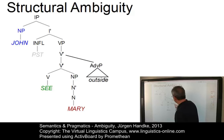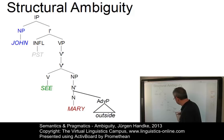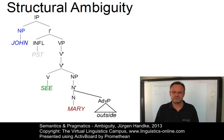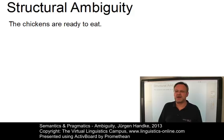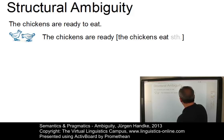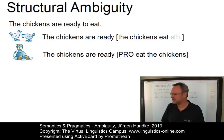The same happens if we replace the prepositional phrase with an adverbial: 'John saw Mary outside.' In one interpretation, John must have been outside — the seeing took place outside. In the second interpretation, Mary must certainly have been outside. In non-finite clauses such as 'the chickens are ready to eat,' we can also have structural ambiguity. This can mean the chickens are ready to eat something themselves, or alternatively, the subordinate clause has the chickens as the object — someone signaled by 'pro' wants to eat the chickens.